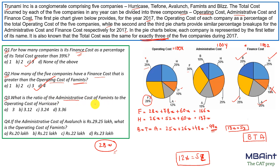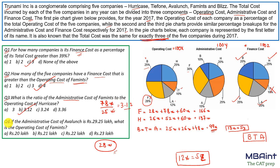Question 3: What is the ratio of administrative cost of F to operating cost of H? Administrative cost of F = 30y = 78x. Operating cost of H = 25x. Ratio = 78x : 25x. Cancelling x, we get 78:25, which simplifies to 3.12:1, or we can express it directly as 78:25.